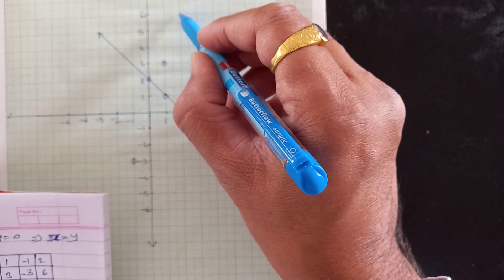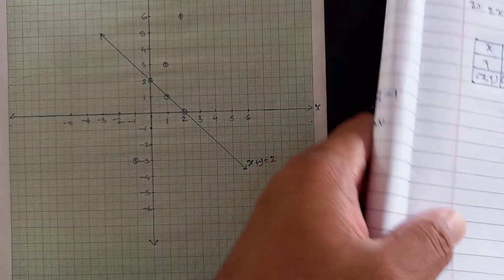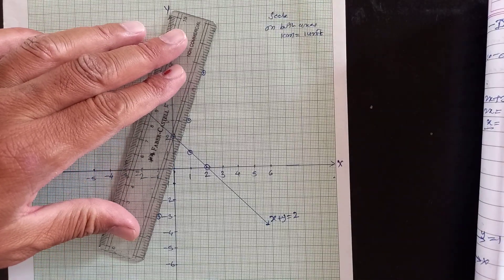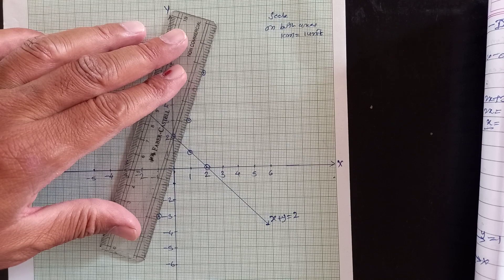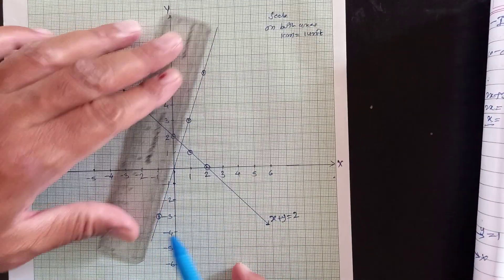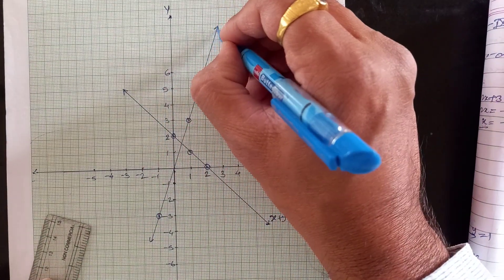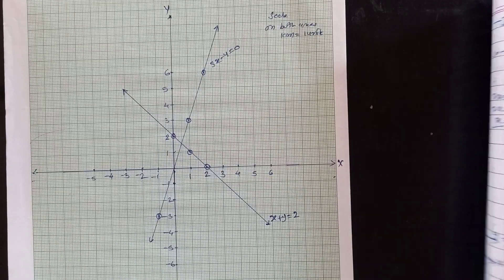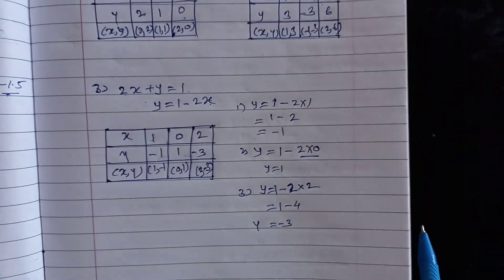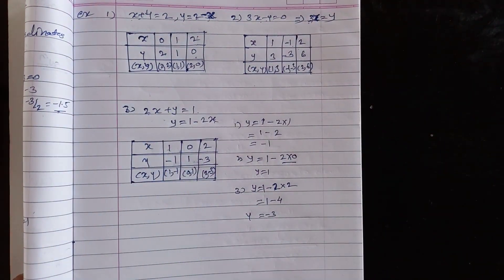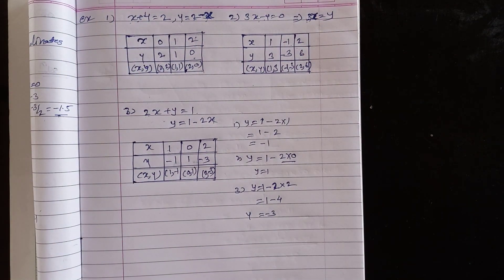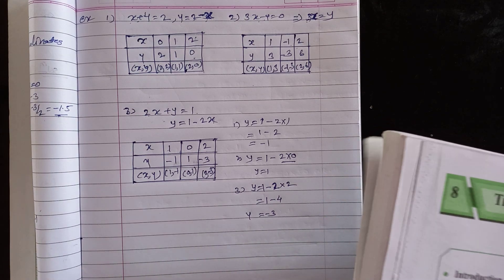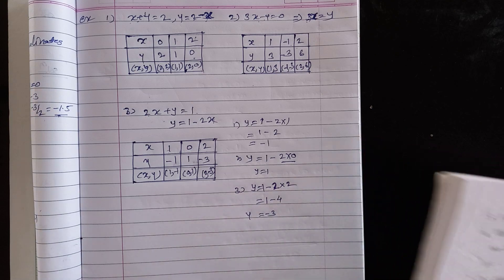Remove the notebook, take a scale, and check that all points pass through one line. If they do, draw the line with arrows. This line represents the equation 3x - y = 0. So we have drawn two graphs. The last one — 2x + y = 1 — you have to draw using its table. Draw the line such that all plotted points pass through it.